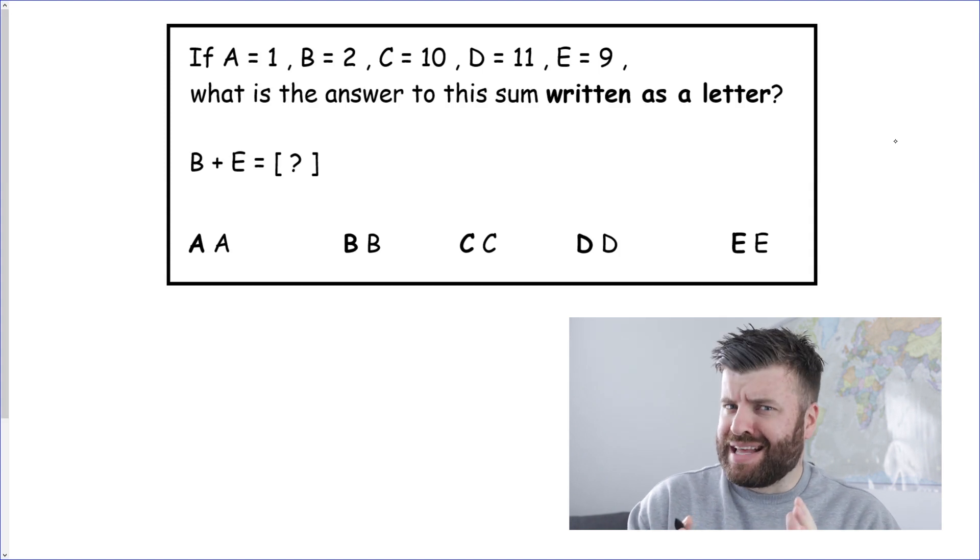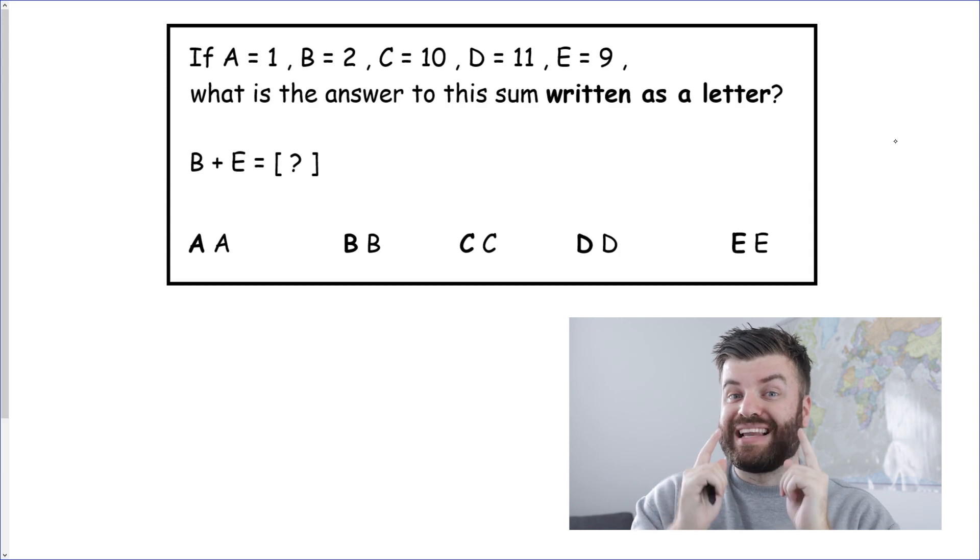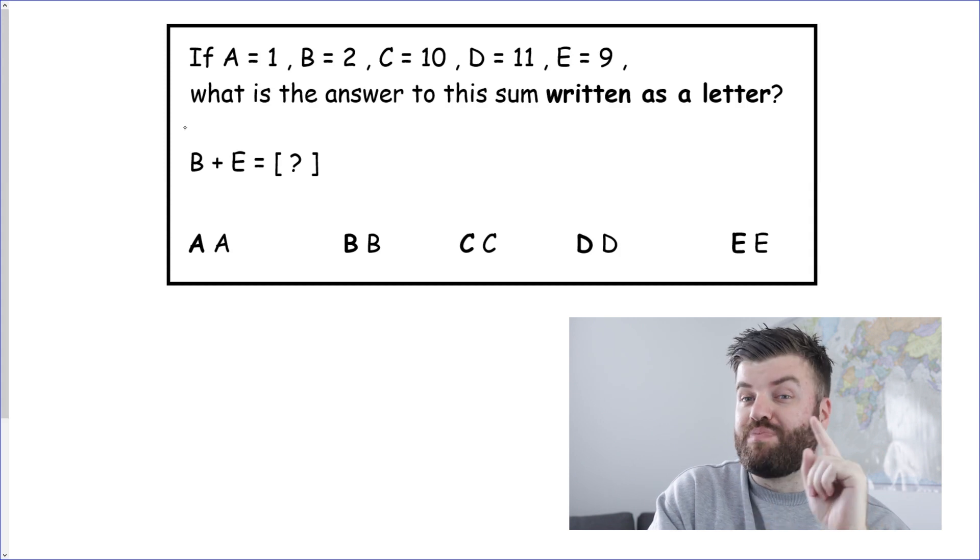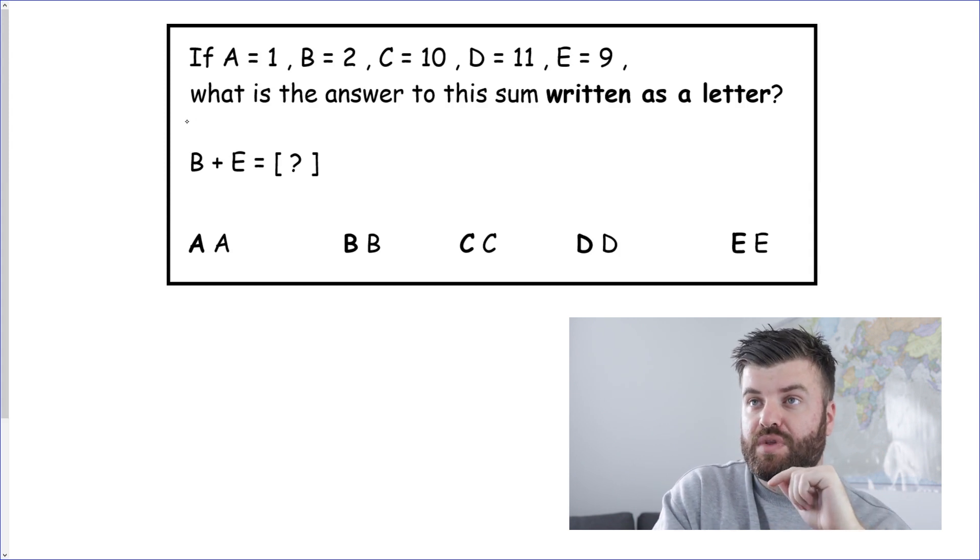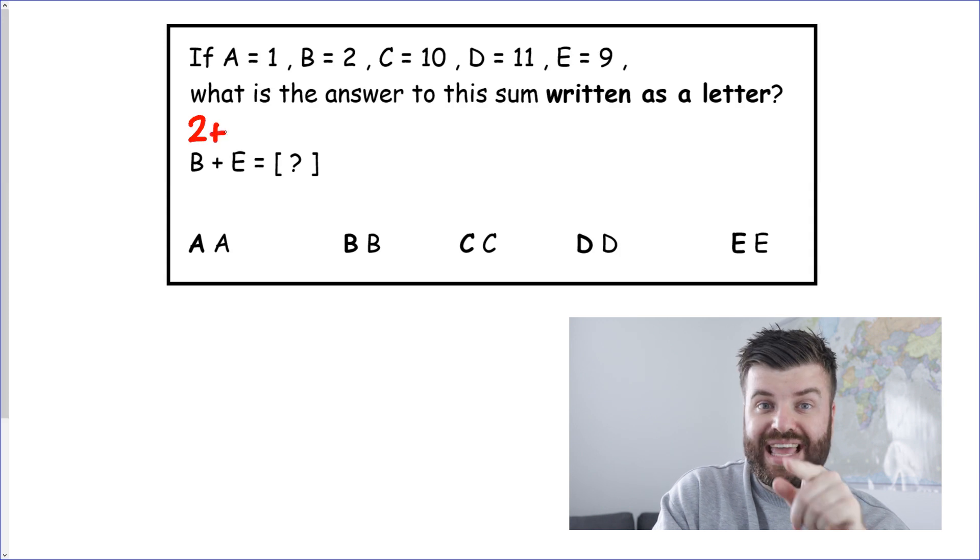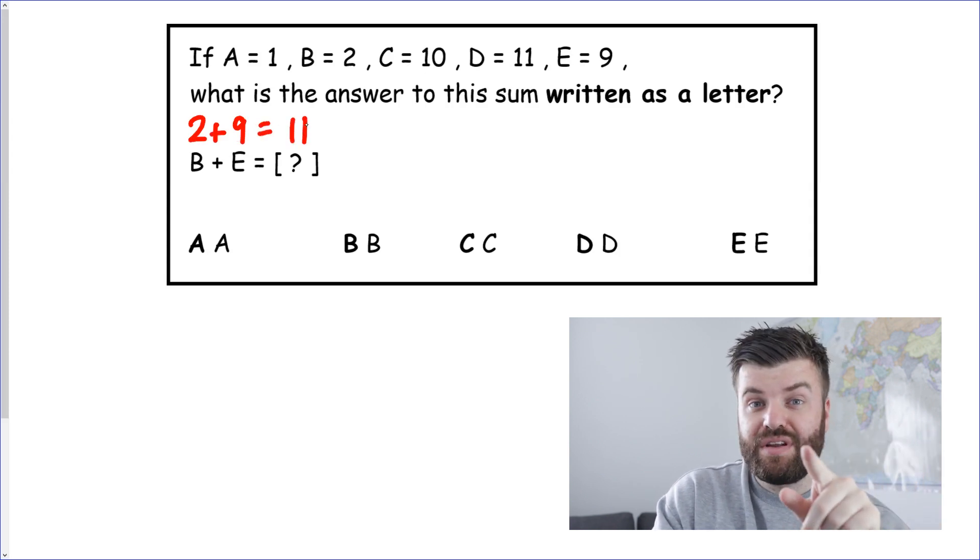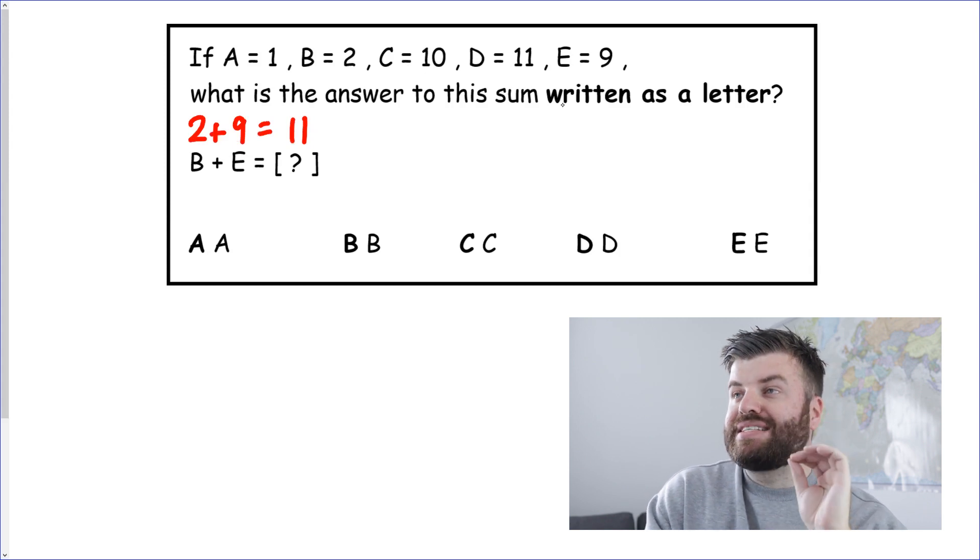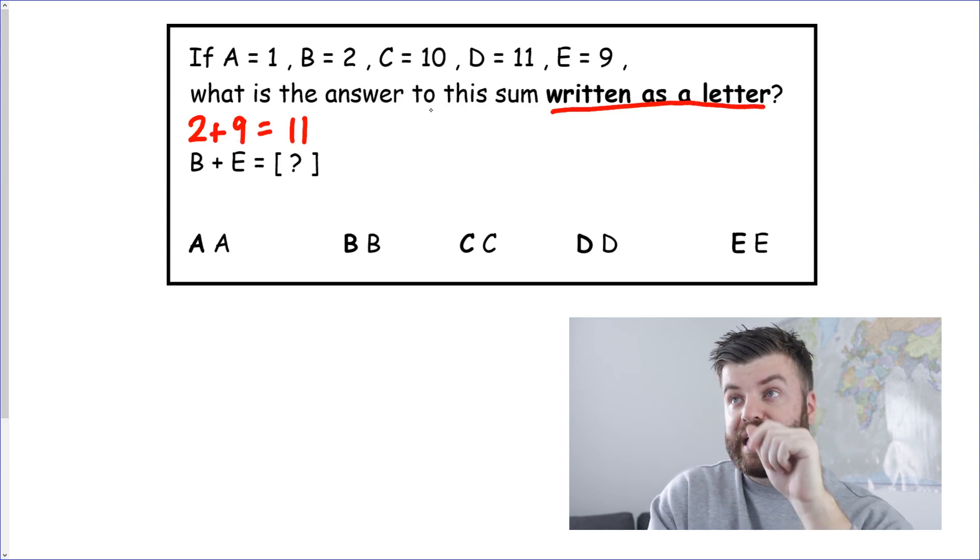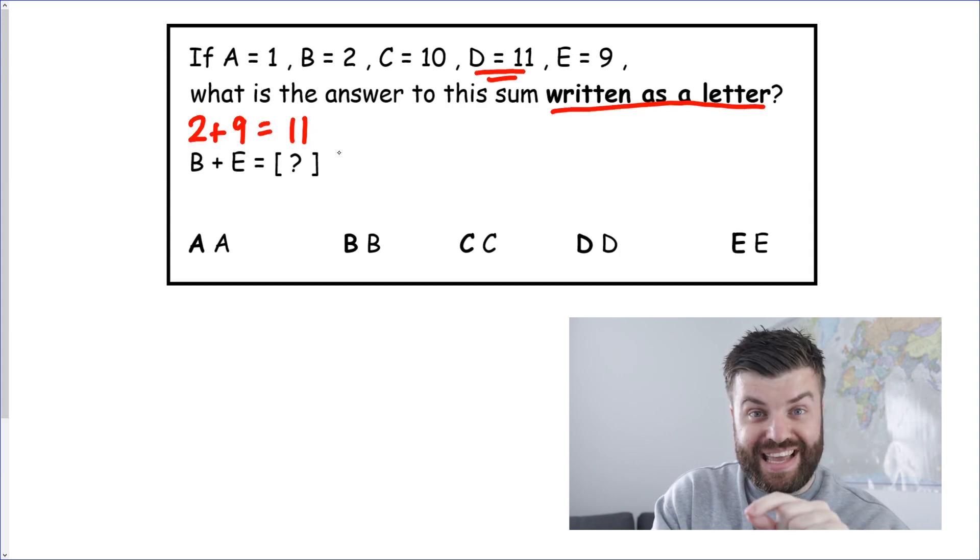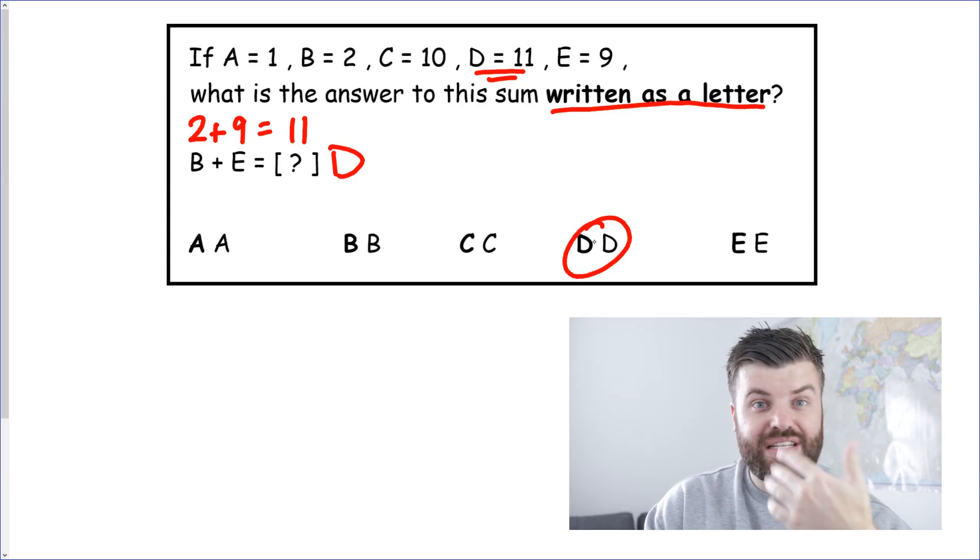Now you're not going to make the same mistake as Hayden earlier where you're thinking that we're adding letters. No. We're going to use what the letters represent which will be a number. So let's take a look. B. Well you're given the code so make sure you write above B what it's actually worth. B is worth 2. So we have 2 here plus E and E at the top is 9. So we have 2 plus 9. Now's the time to do your mental arithmetic. 2 plus 9 hopefully we all know is 11. But that's not the answer. Remember it says written as a letter. So we go back to our code and find 11. 11 is here. It's D. So the answer to B plus E equals D and we put that as our answer and we move on.